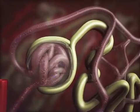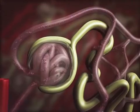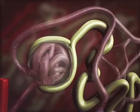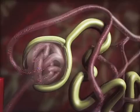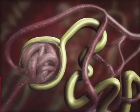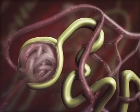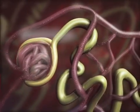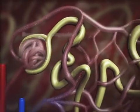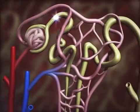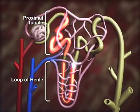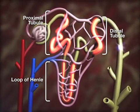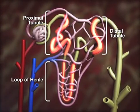Blood that enters the glomerulus is under relatively high pressure, which forces water, salts, and other small metabolites to filter out of the capillaries and into the surrounding space known as Bowman's capsule. The filtrate then passes through the proximal tubule, the loop of Henle, and the distal tubule before leaving the nephron and entering the collecting duct system.